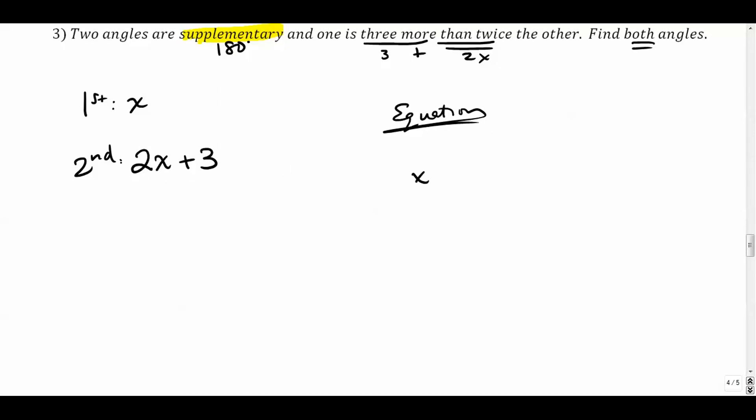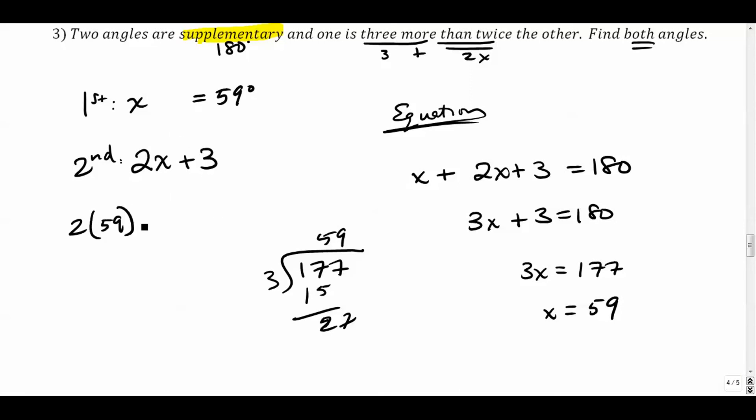Combine like terms and solve. 3x is equal to 177, so 177 over 3. Let's see what that is. We get 59. 59 is the first angle, and the second one should be two times that plus 3, so that's 118, 121. And we'll check to make sure that these two add up to 180. 121 and 59, yep, that works out fine.